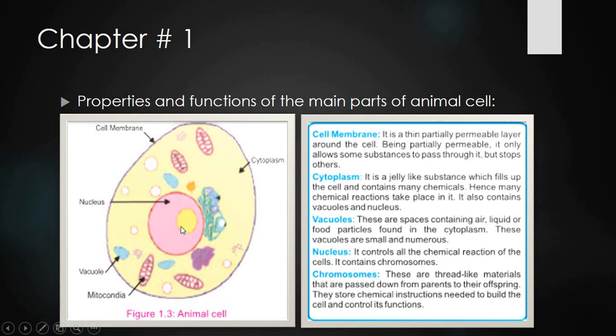What are chromosomes? These are thread-like materials that are passed down from parents to their offspring. They store chemical instructions needed to build the cell and control its functions. The chromosomes contain instructions on how the cell will be formed and how its functions will be controlled — all such instructions are stored in the chromosomes.